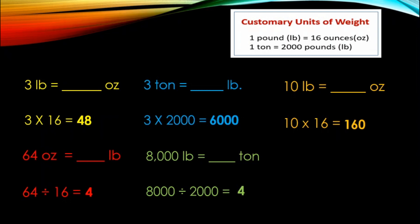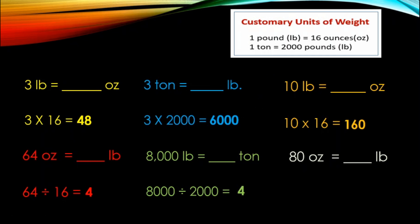And for our last problem: 80 ounces equals how many pounds? Ounces to pound — right to left, smaller unit to larger unit, so we will use division. 80 divided by 16, the answer is 5. 80 ounces equals 5 pounds.